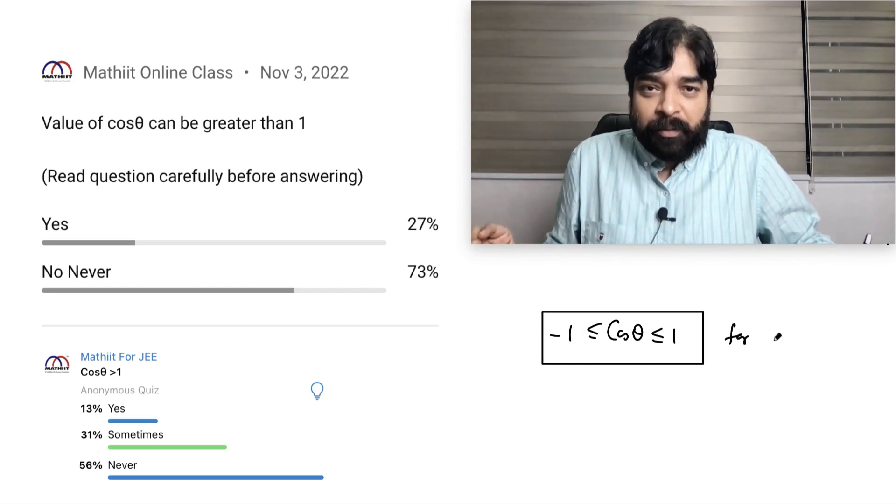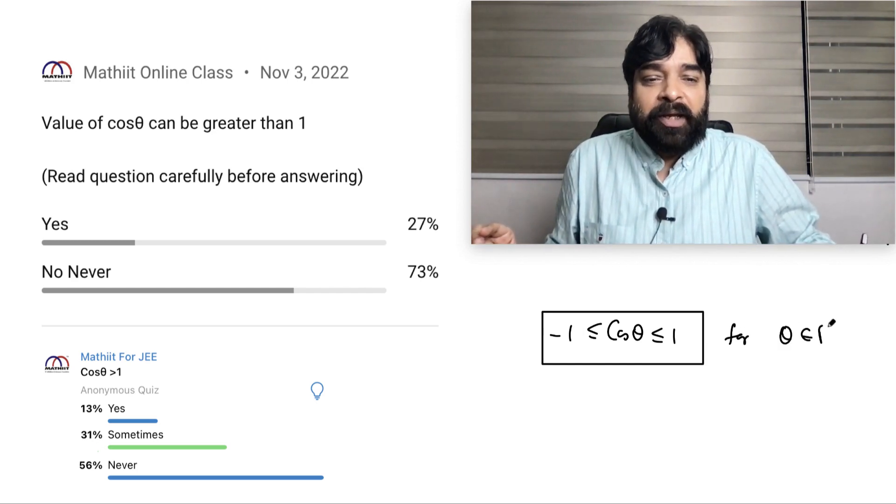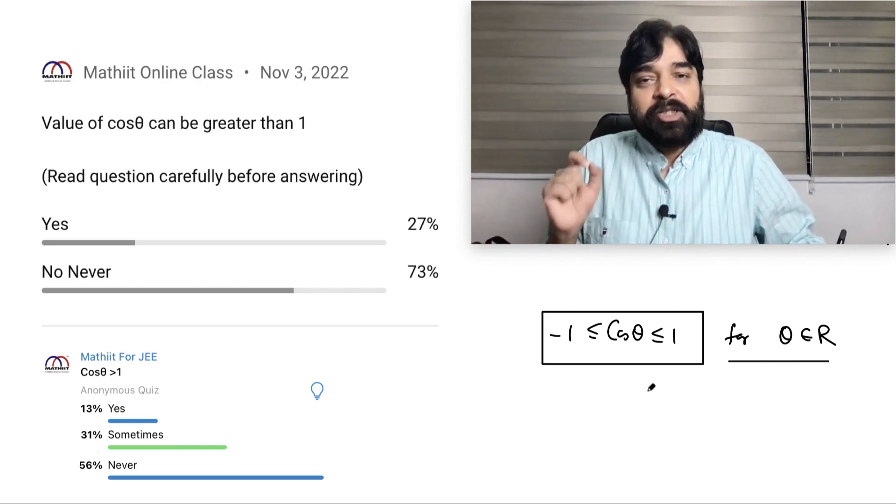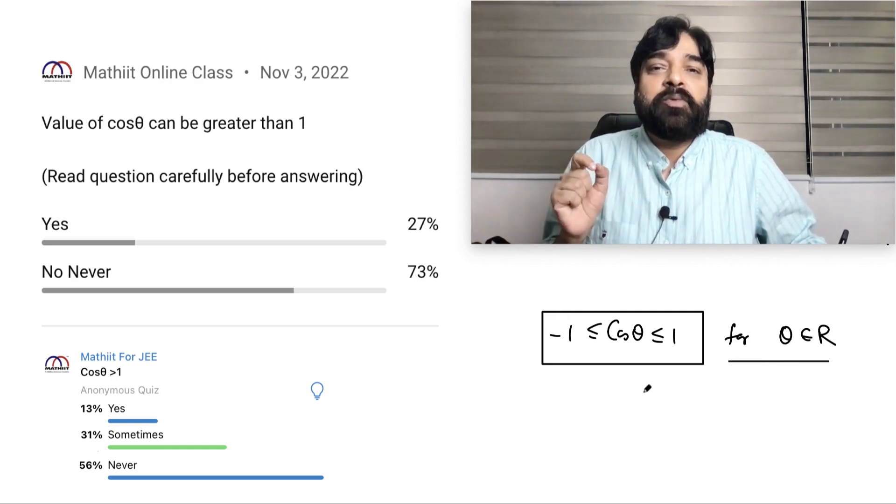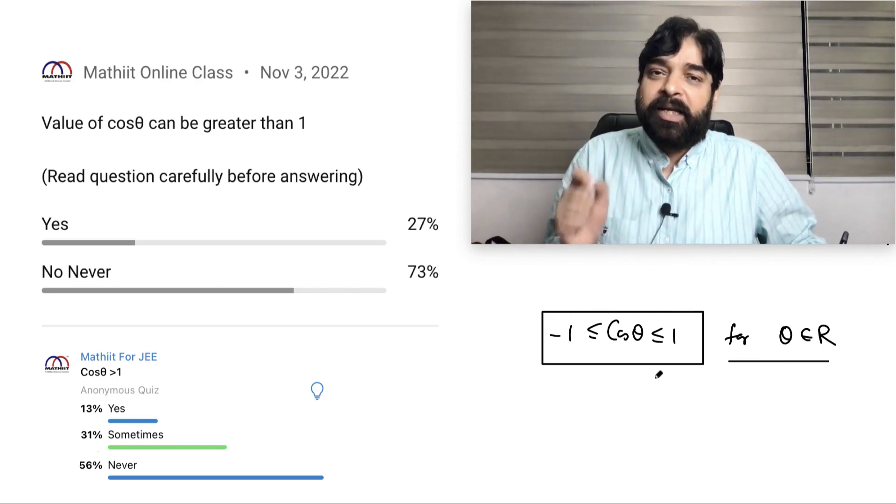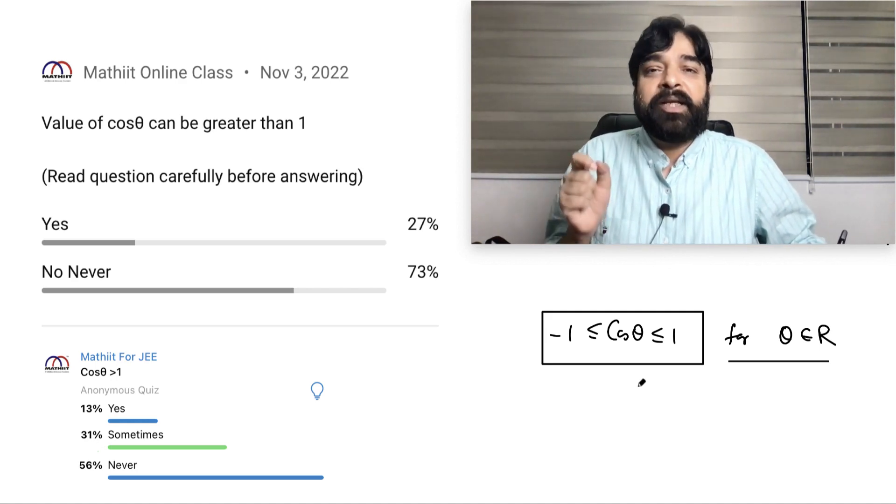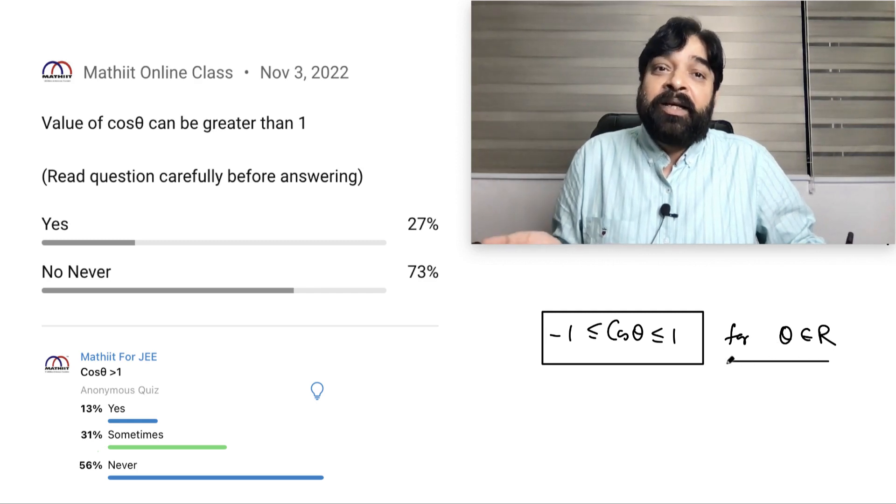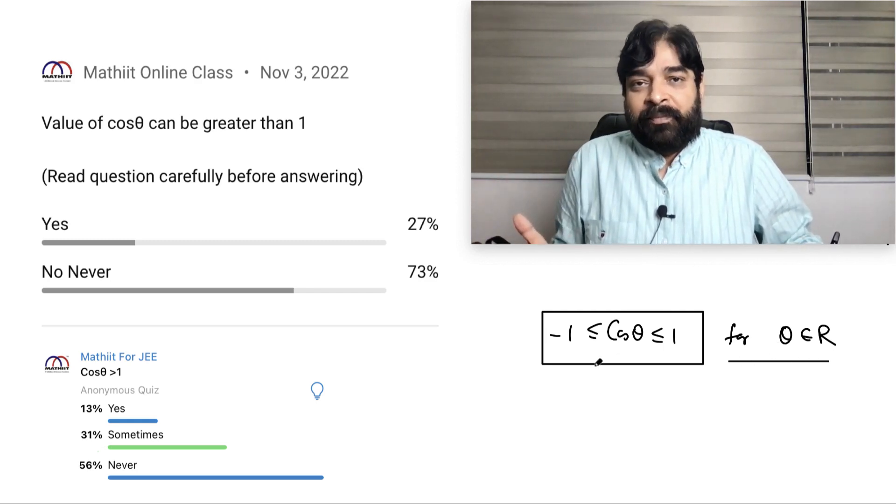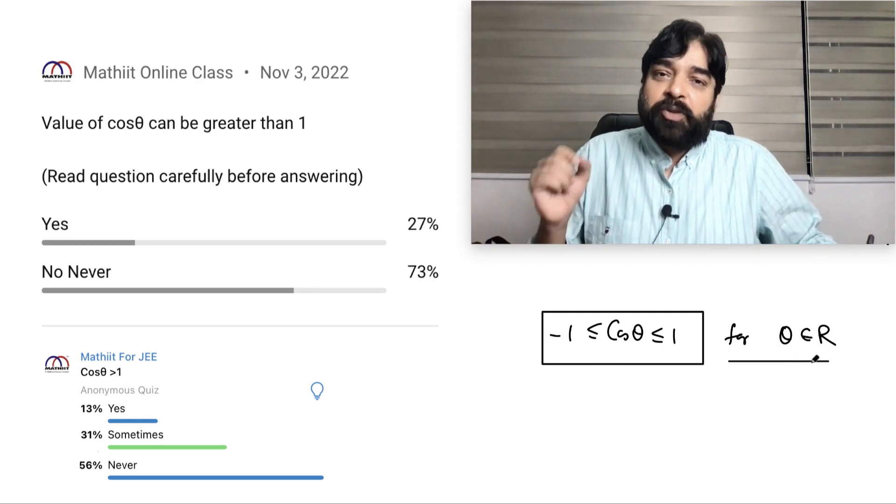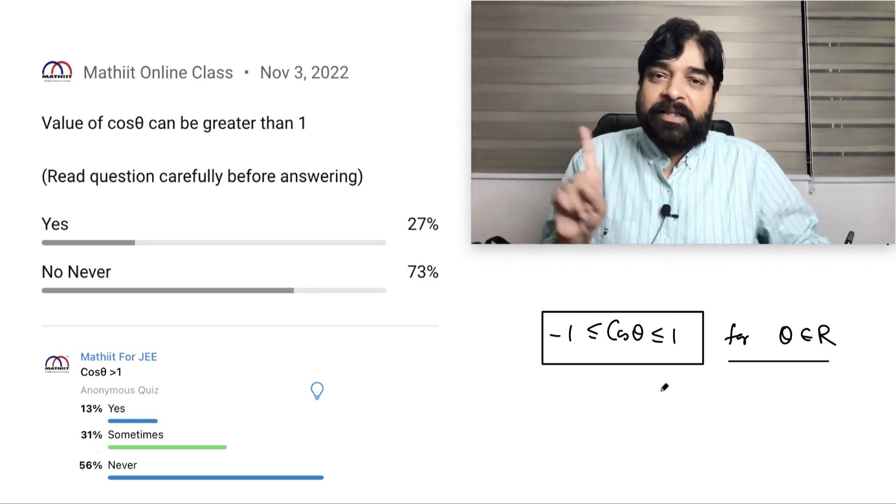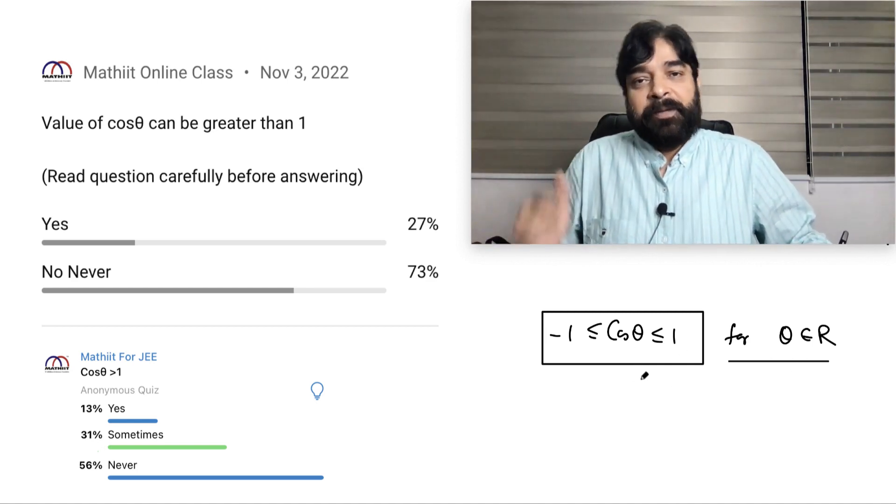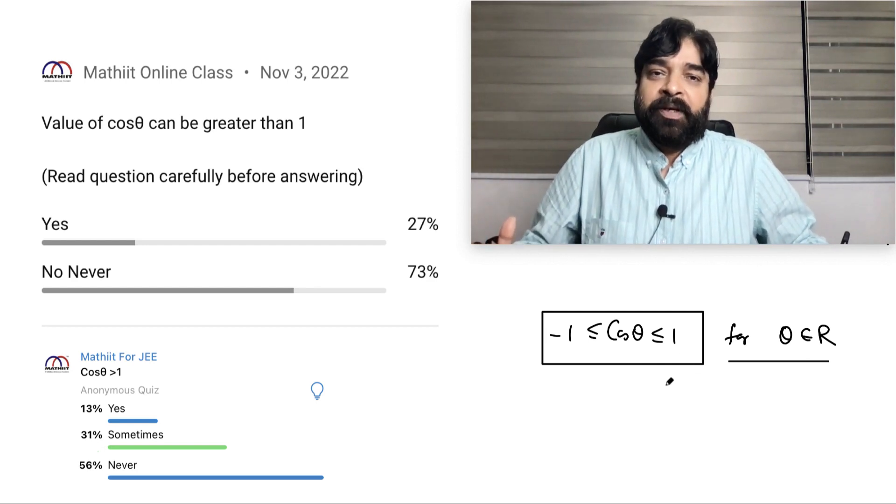But with this, one extra condition is there which people use to ignore: for θ belongs to real number. This line you have to be careful. The purpose of making the video is just to teach you, to make you aware that whenever you are reading any particular inequality, equation, or condition, always check that condition is valid when. So that is θ belongs to real number, then only it's valid.